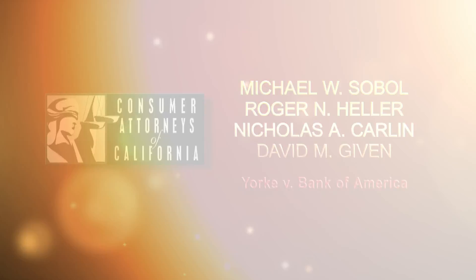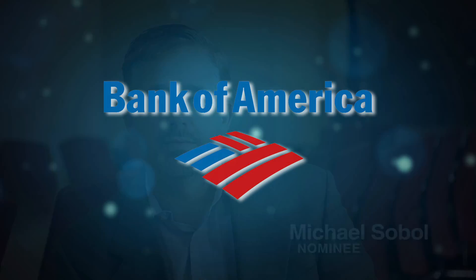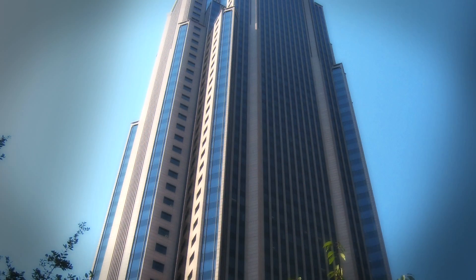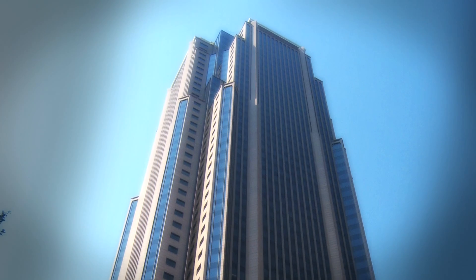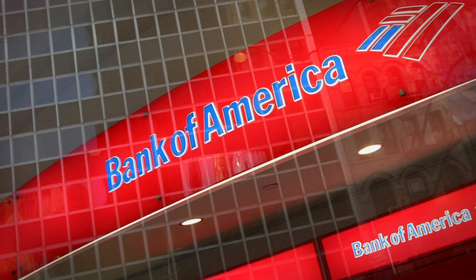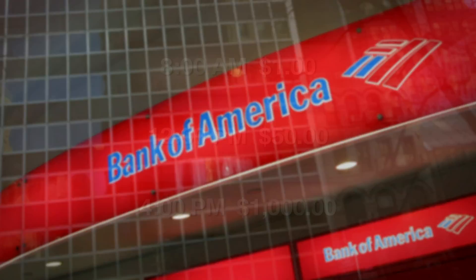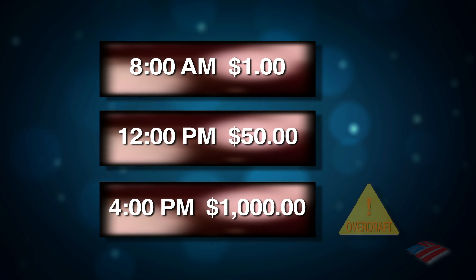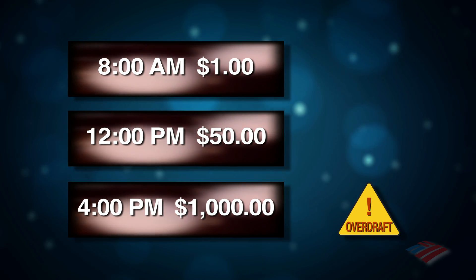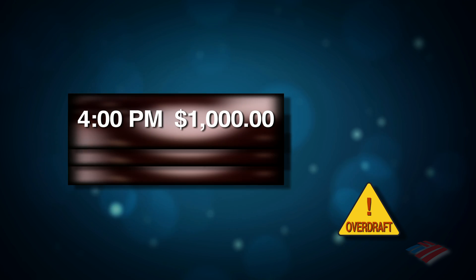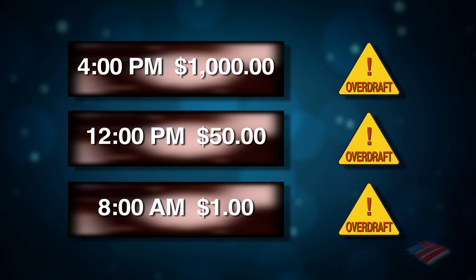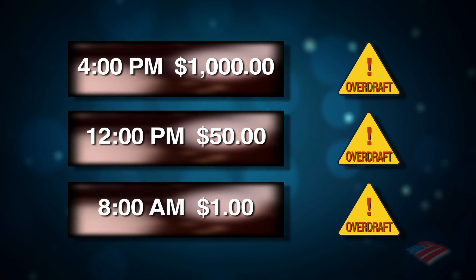This case was about whether or not it was fair for Bank of America to reorder transactions for the sole purpose of creating overdrafts to generate excessive overdraft fees. Instead of taking customers' transactions in the naturally occurring chronological order, Bank of America would reorder them high to low. The mathematical consequence was to create more chances that subsequent transactions would overdraft the account.